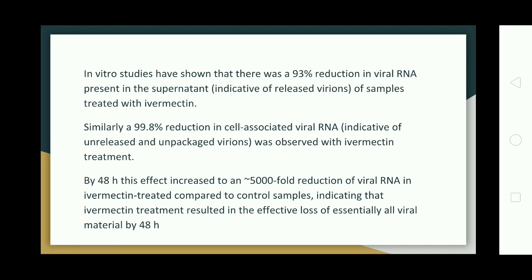Ivermectin's nuclear transport inhibitory activity may be effective against SARS coronavirus 2. In vitro studies have shown a 93 percent reduction in viral RNA present in the supernatant, indicative of released virions, in samples treated with Ivermectin. Similarly, a 99.8 percent reduction in cell-associated viral RNA, indicative of unreleased and unpackaged virions, was observed with Ivermectin treatment. By 48 hours, this effect increased to an approximately 5,000-fold reduction of viral RNA in Ivermectin-treated compared to control samples, indicating effective loss of essentially all viral material.